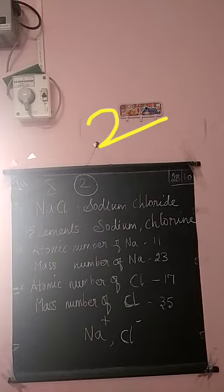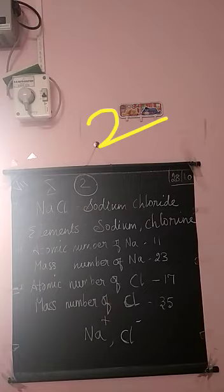Write the ions in the compound. That is sodium plus ion and chlorine minus ion. Sodium plus, chlorine minus.